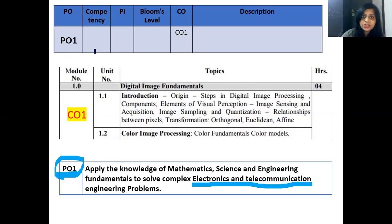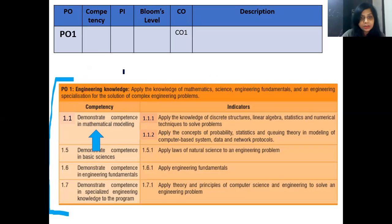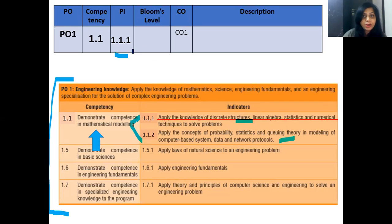The next step is to decide the competency level. From the AICTE exam reform policy book, there is a table for PO1. After reading all the rows in this table, I found that the competency that fits module 1 is 1.1 — demonstrate competency in mathematical modeling. So the competency level for module 1 becomes 1.1. Competency 1.1 is further divided into two parts. After reading both statements, I found one more relevant to module 1, making the performance indicator (PI) 1.1.1.